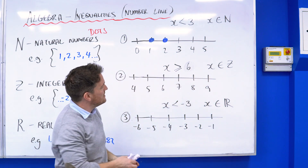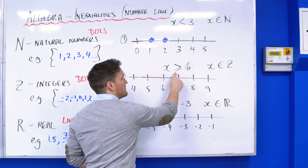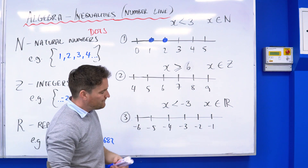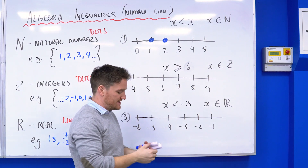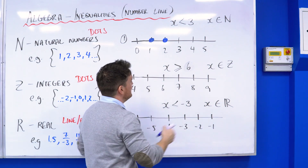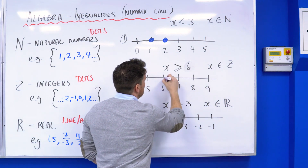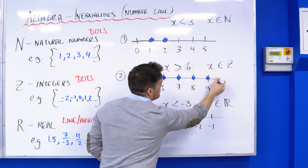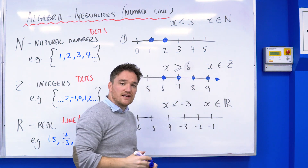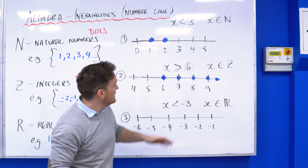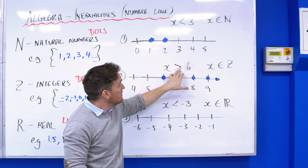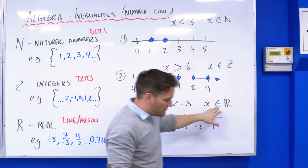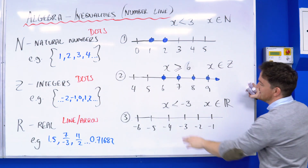Now let's look at x is an element of Z. This time x is greater than or equal to six — notice the line underneath means 'greater than or equal to', so it can include the value six. Which numbers are greater than six? All the numbers to the right: six, seven, eight, nine, and you can draw an arrow to show it keeps going. I included six because it had the equal-to sign, whereas before I didn't include three because it didn't have equal to.